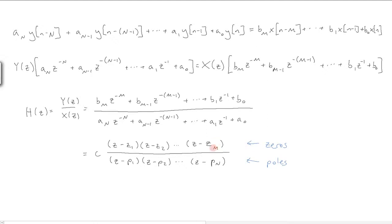The zeros are locations where the entire transfer function goes to zero, since each term creates zero. The poles are locations where the transfer function goes to infinity, since they place a zero in the denominator.